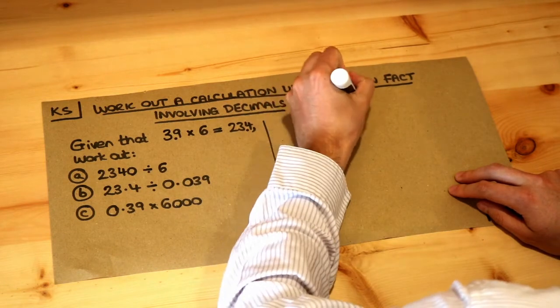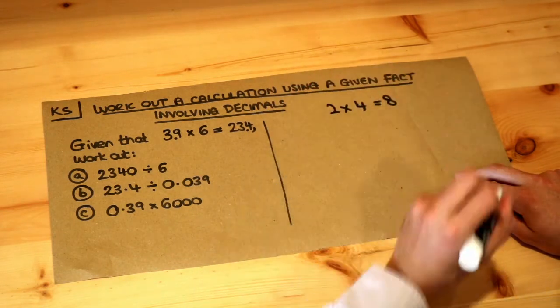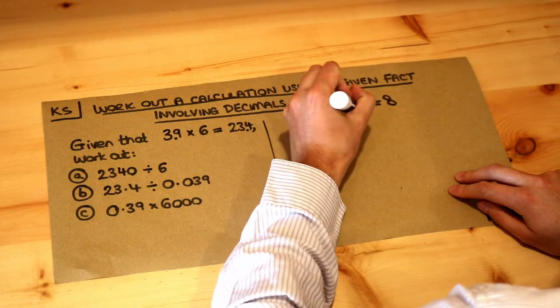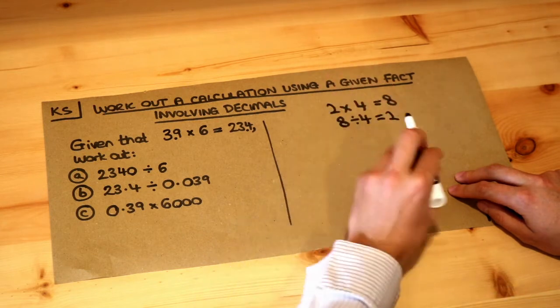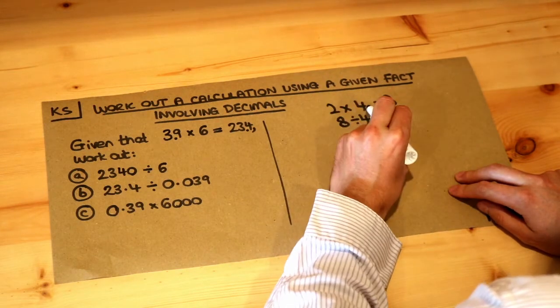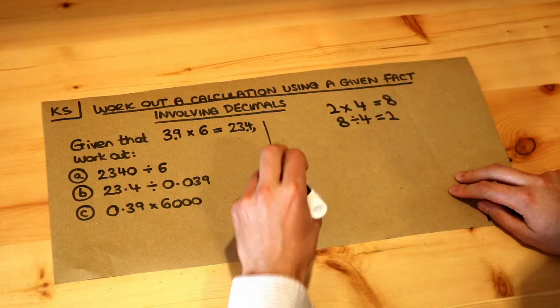Imagine if you had 2 times 4 equals 8, and I'm sure you accept that. You probably also accept that 8 divided by 4 is equal to 2. So I could do 8 divided by either of these numbers to get the other. So 8 divided by 2 is 4, 8 divided by 4 is 2. And we can do the same here.